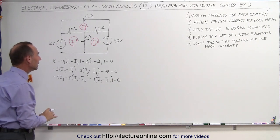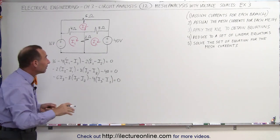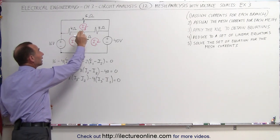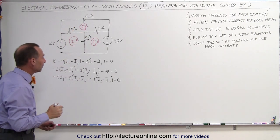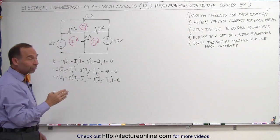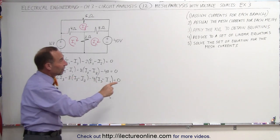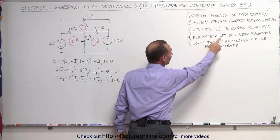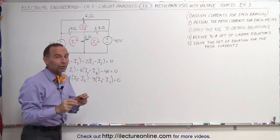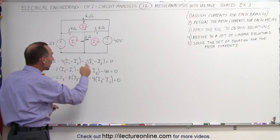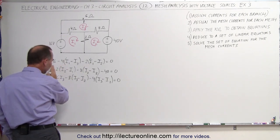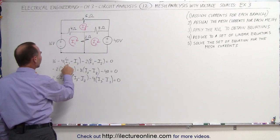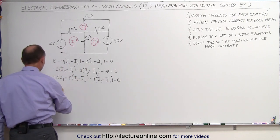So now we have our three equations and three unknowns: I1, I2, and I3. The beauty of this method is that even though we have many more branches, it reduces to just three meshes and three mesh currents, making it a lot easier to solve. In order to solve, we need to rewrite and reduce the set of linear equations so that I1, I2, and I3 each appear once per equation, with constants on the other side of the equal sign. From the first equation: minus 4I1, minus 2I1 gives minus 6I1.